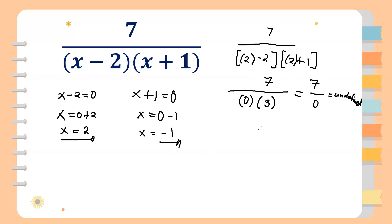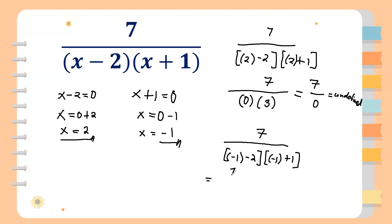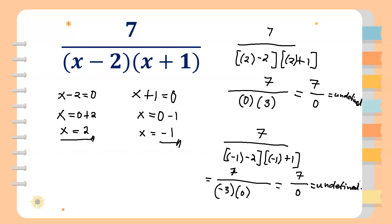Let's also try the value of negative 1. We have 7 over the quantity of negative 1 minus 2, times the quantity of negative 1 plus 1. So negative 1 minus 2 equals negative 3, and negative 1 plus 1 equals 0. The denominator is negative 3 times 0, which equals 0. So the answer is also undefined. That's how you simply make the rational expression undefined.